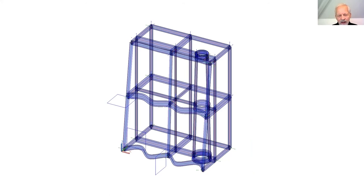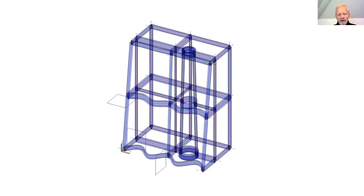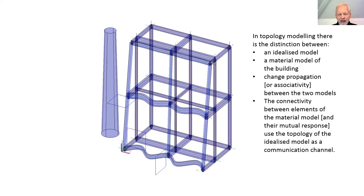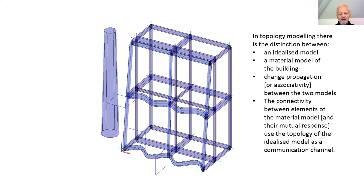We can switch off the display of the faces and pass something like an atrium or a core through the building. The whole basis of this is that the relationship between the idealized model and the material model is a rule-based, computational system. So I can pass this through amoeba-like, and the same rules apply — the association between the topological idealized model and the material model with change propagation. I don't have to manually go back into the BIM model and change it. This is all automated. This is a tremendous freedom.